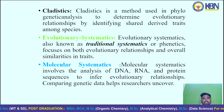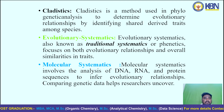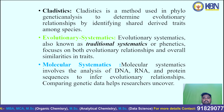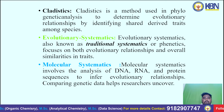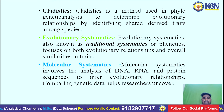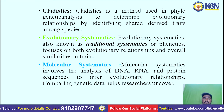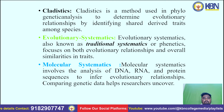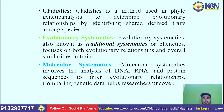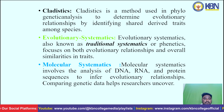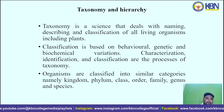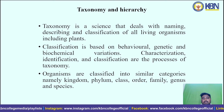Evolutionary systematics, also known as traditional systematics or phonetics, focuses on both evolutionary relationships and overall similarities in traits. Next is molecular systematics, which involves the analysis of DNA, RNA and protein sequences to infer evolutionary relationships. Comparing genetic data helps researchers uncover these relationships.